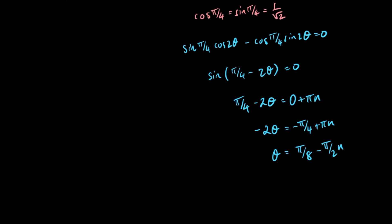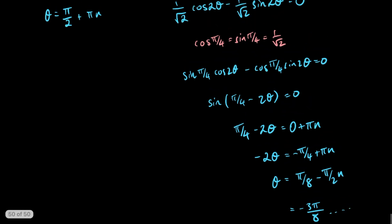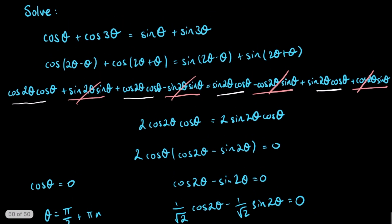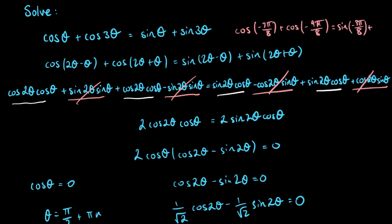Let's check one of these solutions with our original equation. Our first solution here would be −3π/8, so let's go ahead and check that with our original equation. Plugging in −3π/8, we get cos(−3π/8) plus cos(−9π/8) equal to sin(−3π/8) plus sin(−9π/8). If you plug that into a calculator you'll find that both sides are equal.